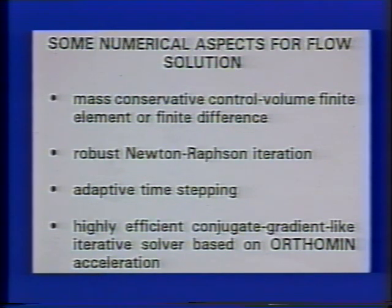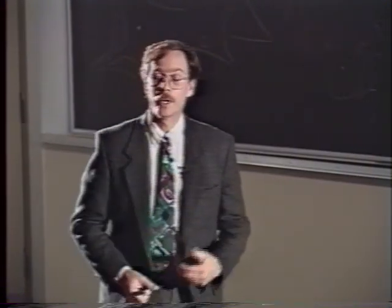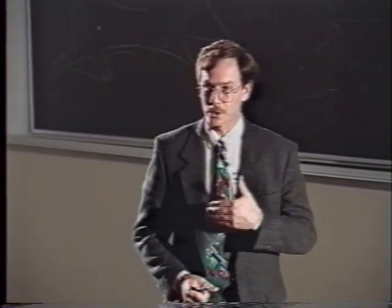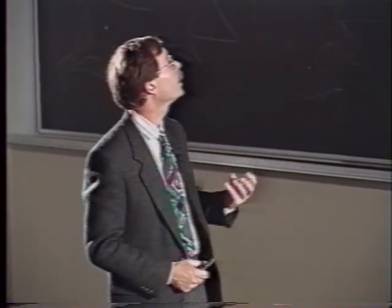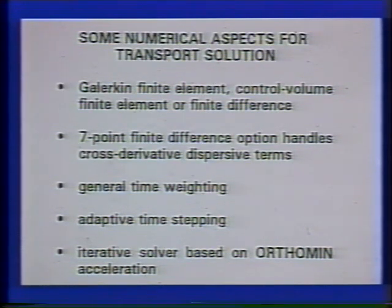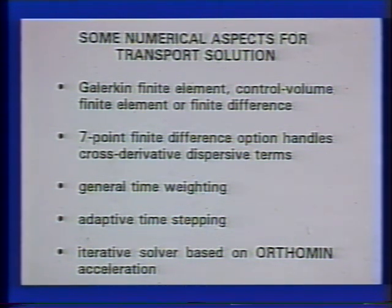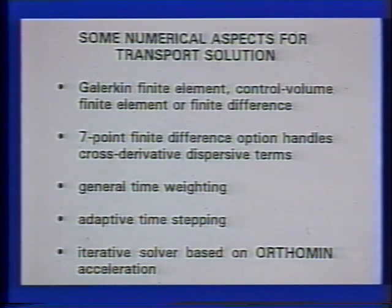For transport, we fully account for matrix diffusion and fluid leakage between fractures and matrix. We use a Galerkin finite element technique, or optionally a control volume finite element or finite difference approach. To conserve memory and increase execution speed, we can switch to a seven-point finite difference scheme. Like the flow model, the transport model uses general time weighting, adaptive time stepping, and the orthomin iterative sparse matrix solver.